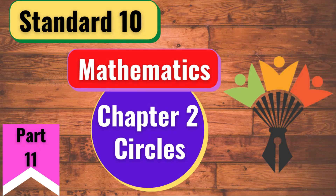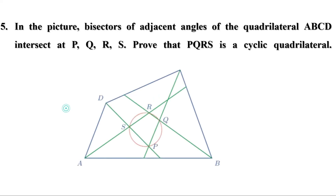Welcome to Maths Companion. In the last video we discussed some problems on page 59. There was a homework — let us check the answer. In the picture, bisectors of adjacent angles of the quadrilateral ABCD intersect at P, Q, R, S. Prove that PQRS is a cyclic quadrilateral.